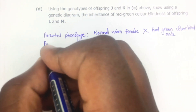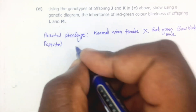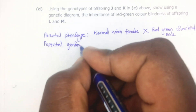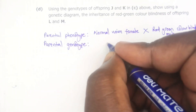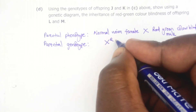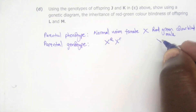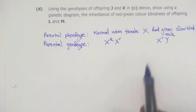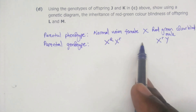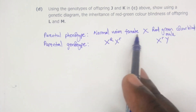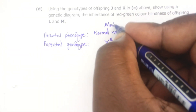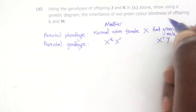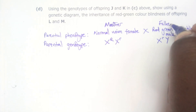Step two is to write the parental genotypes — we already obtained these from question C. For the female (mother) J: X^R X^r. For the male (father) K: X^r Y. Under the parental genotype, only write the genotype symbols, not additional labels.